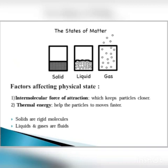Which are the factors affecting the physical state of matter? There are two factors: intermolecular force of attraction and thermal energy. Intermolecular force of attraction holds the molecules together, while thermal energy helps the molecules move.